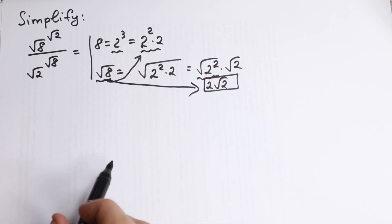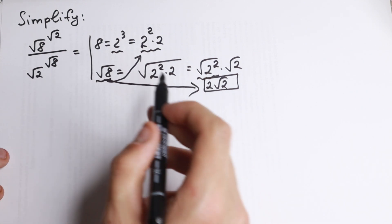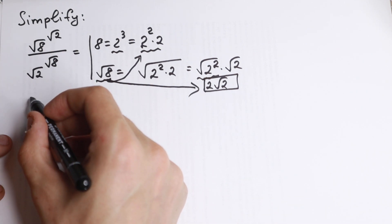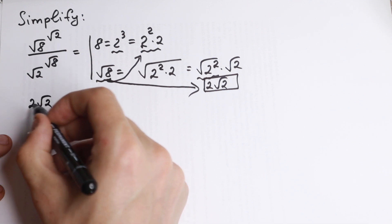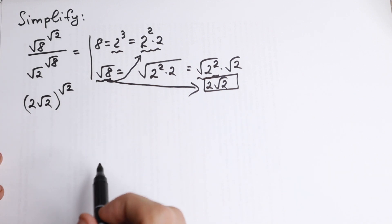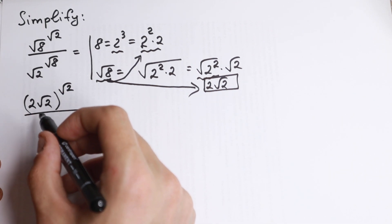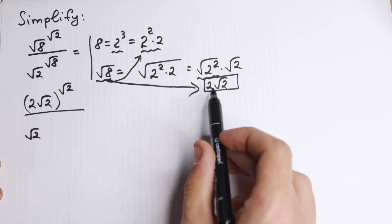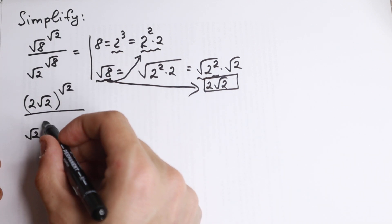Let's go to the next step. Let's replace square root of 8 with 2 square root of 2. In the numerator we will have 2 square root of 2 to the power square root of 2. In the denominator we have square root of 2, and instead of square root of 8 I write 2 to the power 2 times square root of 2.